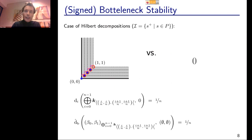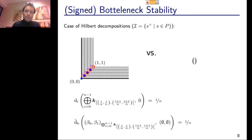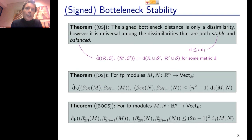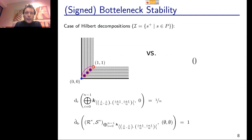On the other hand, we can prove it is universal among all dissimilarities that are both stable with respect to the interleaving distance and balanced — meaning derived from unsigned distances between projectives (free modules for the standard exact structure, or hook-decomposable modules for the rank exact structure). The signed bottleneck dissimilarity is the maximum one among those balanced, stable dissimilarities.